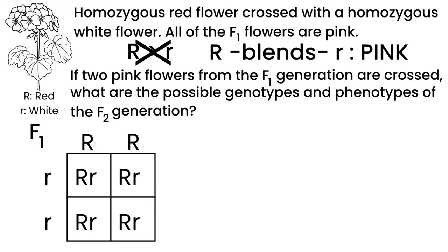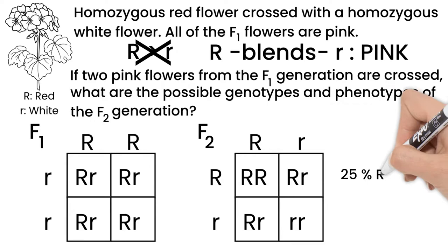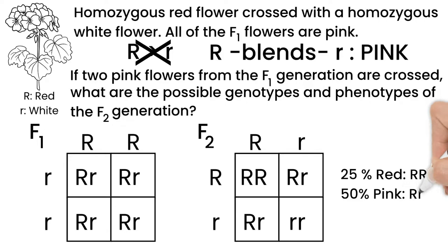So now we cross the heterozygous pink flowers and we get 25% red, big R, big R, 50% pink, big R, little r, and 25% white with a little r, little r.